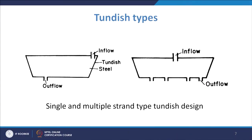Coming to the different types of tundish: the tundish is an intermediate reservoir, and depending on the type or shape of product being made, different tundish designs can be used. One is the single strand tundish — a tundish with one outlet — and another is the multiple strand tundish with many outlets. A four-strand tundish is an example of multiple strand. Liquid metal flows into the tundish and exits through these outlets into the respective molds.